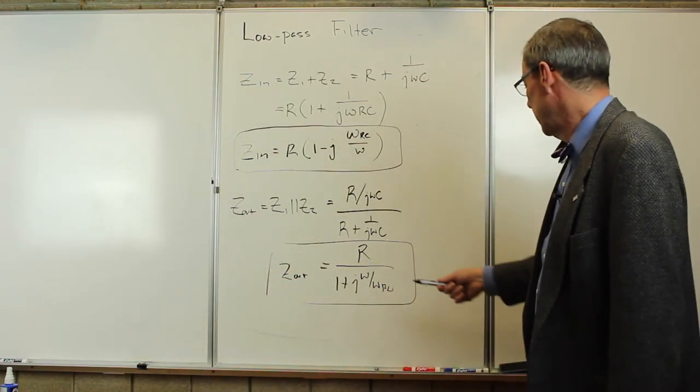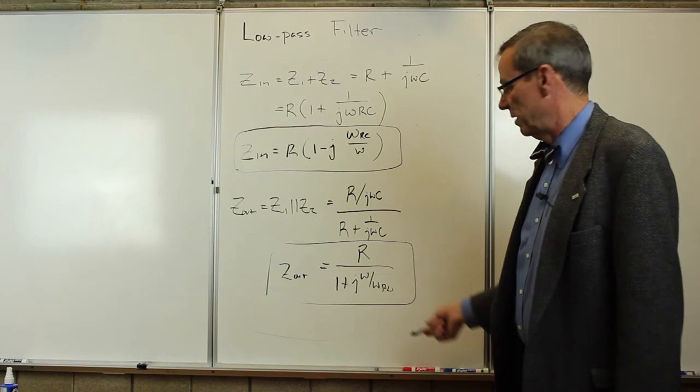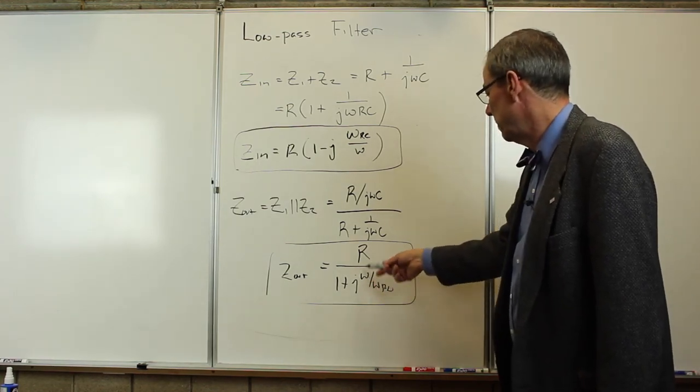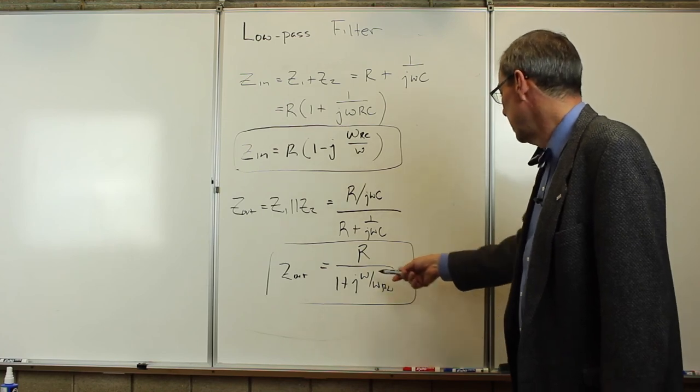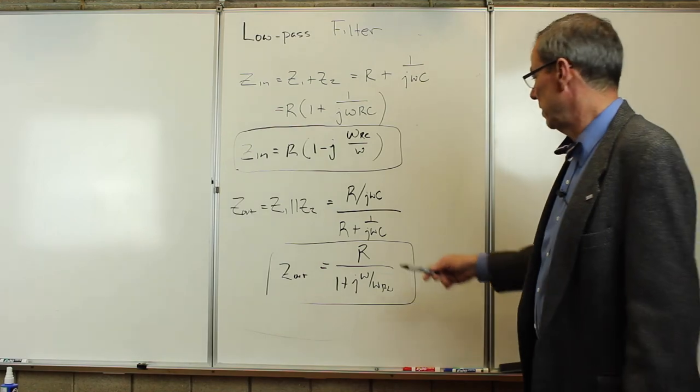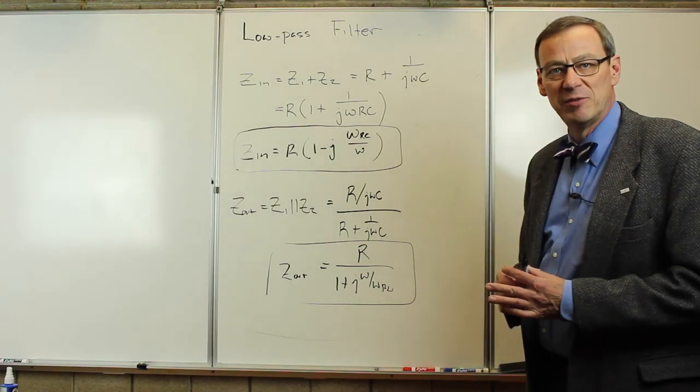Units are given by R. Frequency dependence is here in the denominator. Very high frequencies, this piece wins. The imaginary part looks like the capacitor. Very low frequencies, this goes to zero, looks like the resistor. Output impedance and input impedance, the low pass filter.